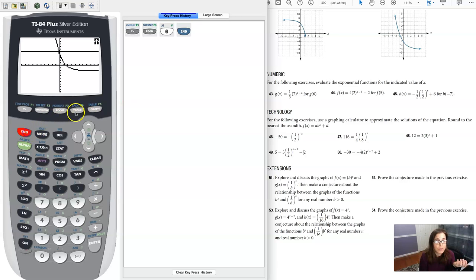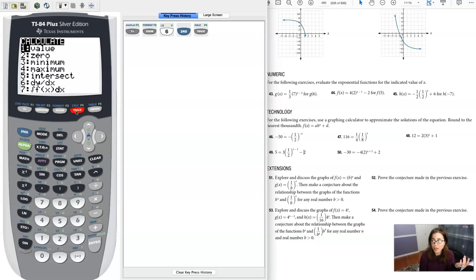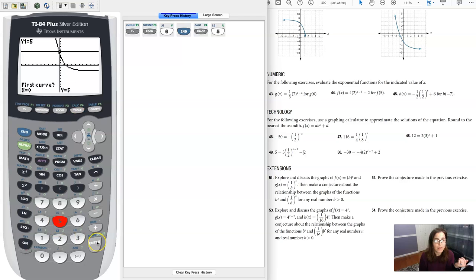So let's find it. We're gonna go second trace, that pulls up our calculation screen. We want option 5, and then it's gonna prompt you first curve, second curve, and guess. We only have the two curves in there, so I'm gonna hit enter and enter, and you could enter a guess. I guessed 0, you could either just hit enter again, or just for fun I'll put 0 in, and then let's see what x value we're getting.